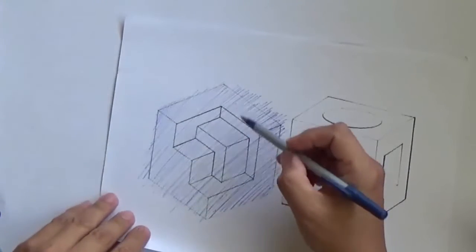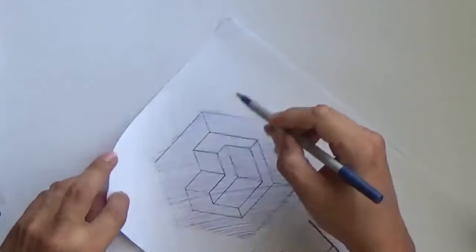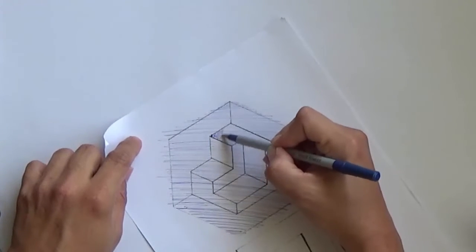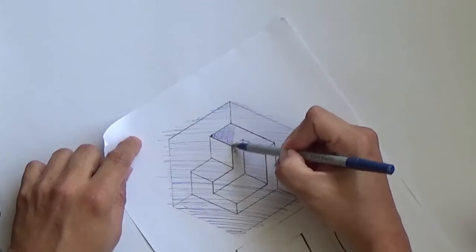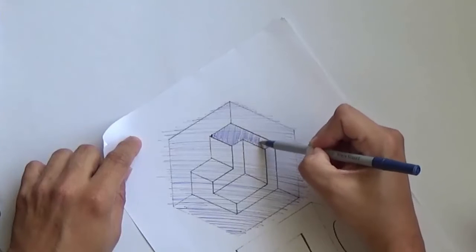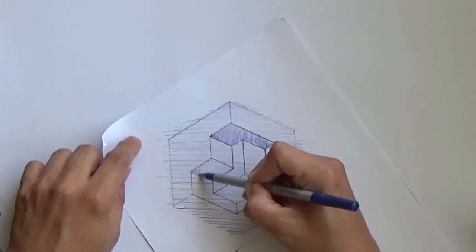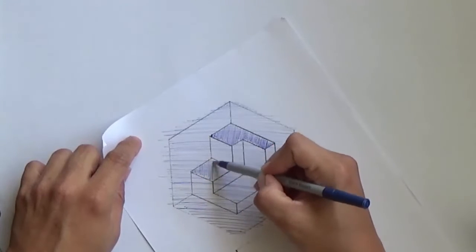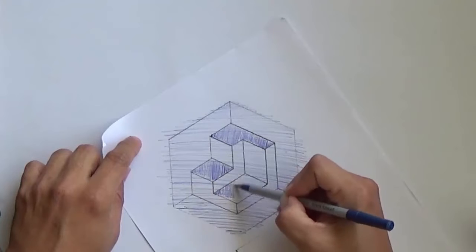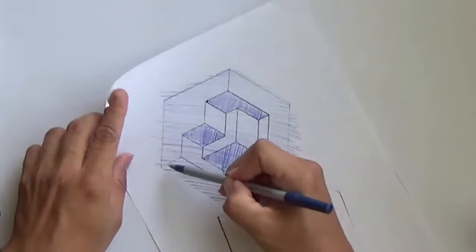I'm going to do the level three next. So I'm going to shade the paper a little bit and gently just shade in level three over these surfaces.